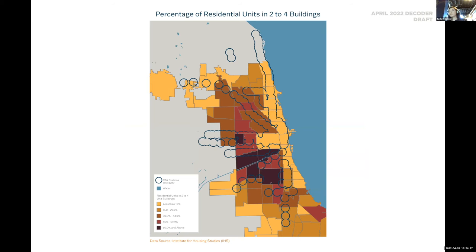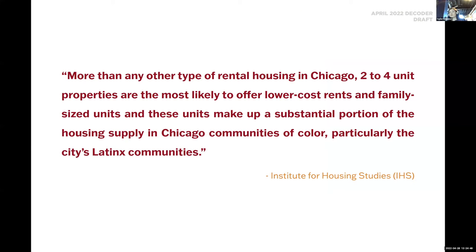This is a half-mile buffer around each transit station, which we'll use throughout the data. As we examine rental housing types by the race of head of household — from the American Community Survey 2019 — we can see patterns of housing types within specific communities. For example, a large portion of renters that are Hispanic or Latino live in two to four unit buildings. This may be linked to housing type preference or availability of housing types within racially separated neighborhoods.